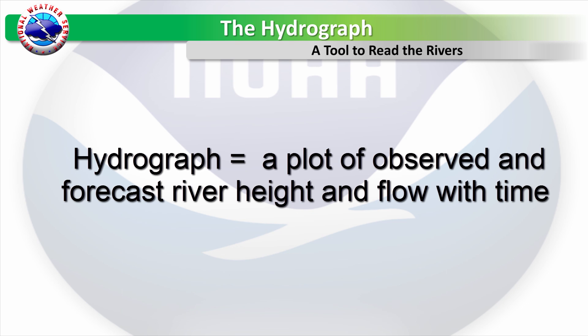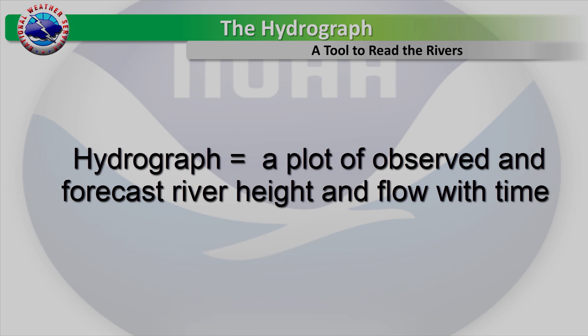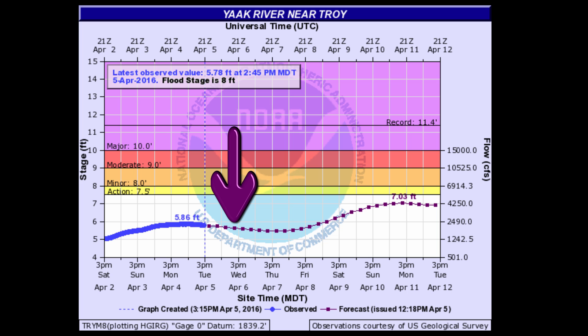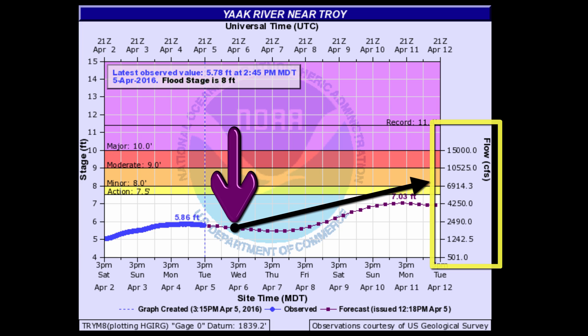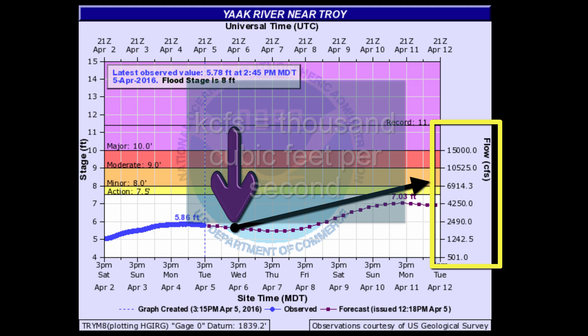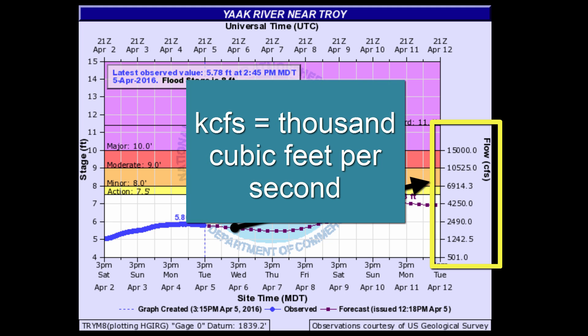A hydrograph is a plot of observed and forecast river height and flow with time. Each point on the graph represents two different variables: river height in units of feet found on the left side, and river flow in units of CFS, which stands for cubic feet per second. It can also say KCFS, which stands for 1,000 cubic feet per second.